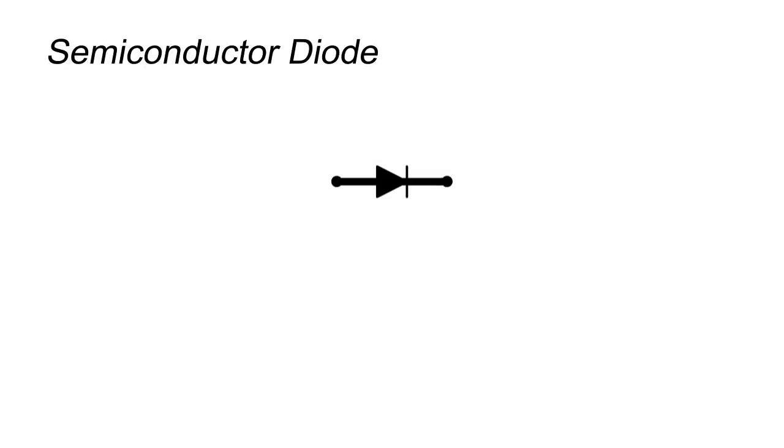Semiconductor Diode: It is an electronic two-terminal device, the two terminals called anode and cathode.